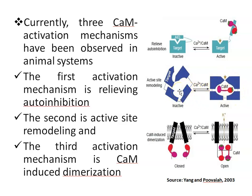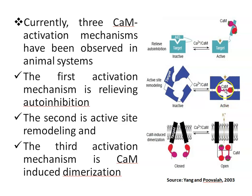Upon Calmodulin binding, a helical domain of a cofactor undergoes rotation away from the catalytic core, which stabilizes the disordered loop and leads to enzyme activation.